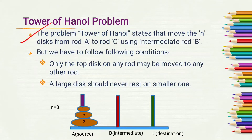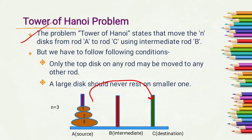The Tower of Hanoi problem states: move all N disks from rod A to rod C using the intermediate rod B. We have to move all N disks from tower A to tower C using this intermediate rod.